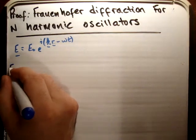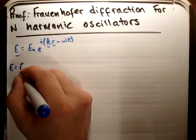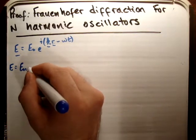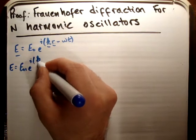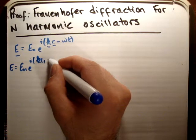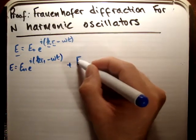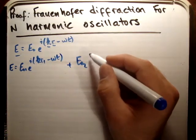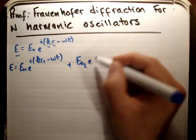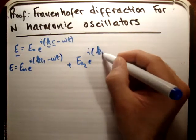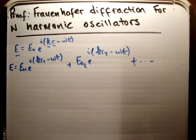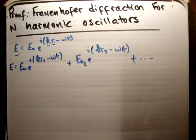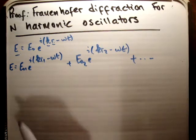So if we add n harmonic oscillators, we're going to get: e01 times e to the ikr1 minus ωt, plus e02 times e to the ikr2 minus ωt, plus dot dot dot. You can see the pattern at this stage. The next thing we need to do is start pulling out some of the factors.